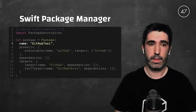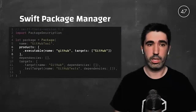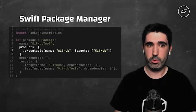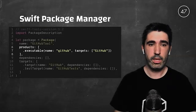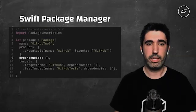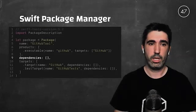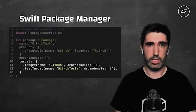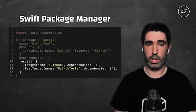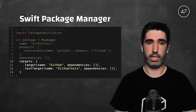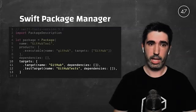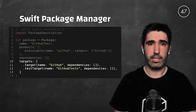We give the package a name and state the products we are going to include — in this case, an executable named GitHub. Then we provide an array of all the dependencies we will use. Finally, we describe an array of all the targets within our package. By default, we have two targets: one containing our production code and another containing our test code. We can add as many targets as we want to modularize our application.